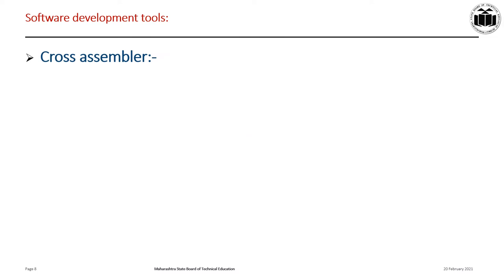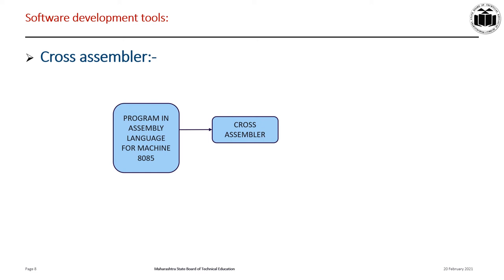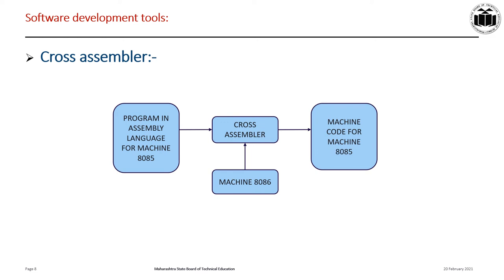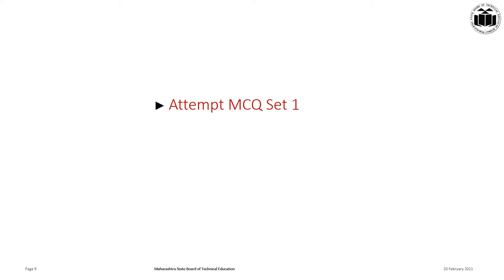A cross-assembler is useful to convert object code for one microcontroller to object code for another microcontroller and vice versa. It is an assembler that runs on a computer with one type of processor but generates machine code for a different type of processor. For example, if we use a PC with 8086-compatible machine language to generate machine code for the 8085 processor, we need a cross-assembler program that runs on the PC but generates machine code for 8085 mnemonics. It takes assembly language as input and gives machine language as output. Now, please attempt MCQs from Set 1, which is given as your assessment sheet.